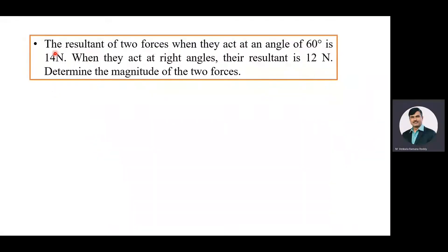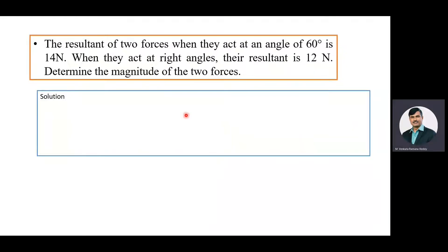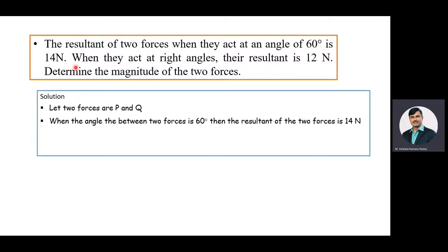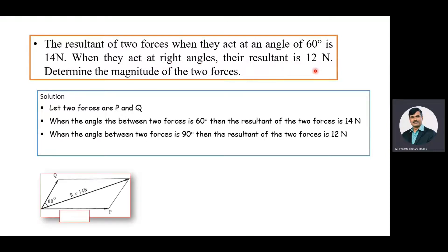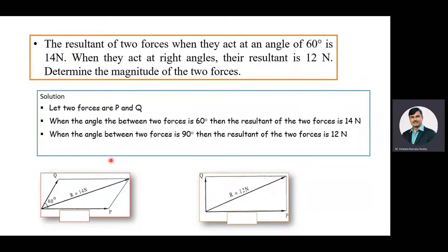The given problem is: the resultant of two forces when they act at an angle of 60 degrees is 14 Newton. When they act at right angles the resultant is 12 Newton. Determine the magnitude of the two forces. Now we will extract the data from this problem. Let us consider the two forces as P and Q. When the angle between the two forces is 60 degrees, the resultant is 14 Newton. When the angle between the two forces is 90 degrees, the resultant is 12 Newton. Our objective is to find the values of forces P and Q.